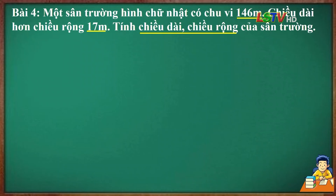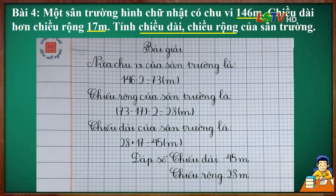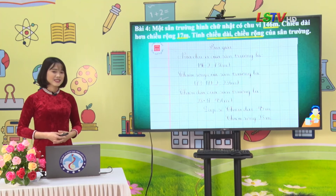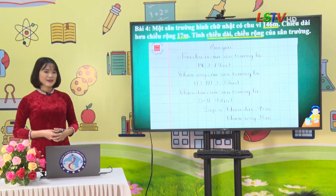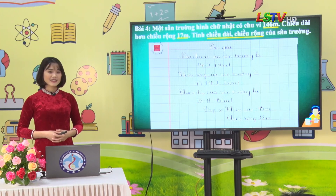Thưa cô, bài giải: nửa chu vi của sân trường là 146 chia 2 bằng 73m. Chiều rộng của sân trường là (73 trừ 17) chia 2 bằng 28m. Chiều dài của sân trường là 28 cộng 17 bằng 45m. Đáp số: chiều dài 45m, chiều rộng 28m. Bài làm của em rất chính xác. Cô khen em. Bạn đã lựa chọn cách giải thứ nhất để giải bài toán.